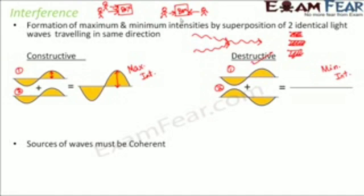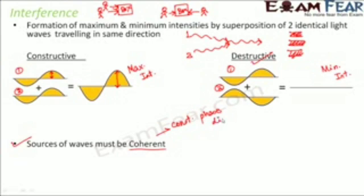There are certain criteria that must be met for interference to take place. The first criterion is that the sources of waves must be coherent. Coherent means that the two waves should always have a constant phase difference between them — that is what we mean when we say the sources are coherent.